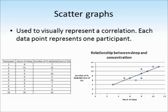The last kind of graph that you need to know about is a scatter graph. And these are used to visually represent a correlation. Each data point on the graph represents one participant. You can find more information about correlations on the correlation tutorial.